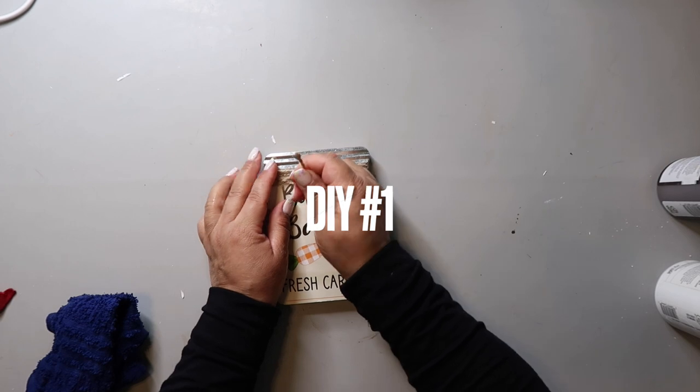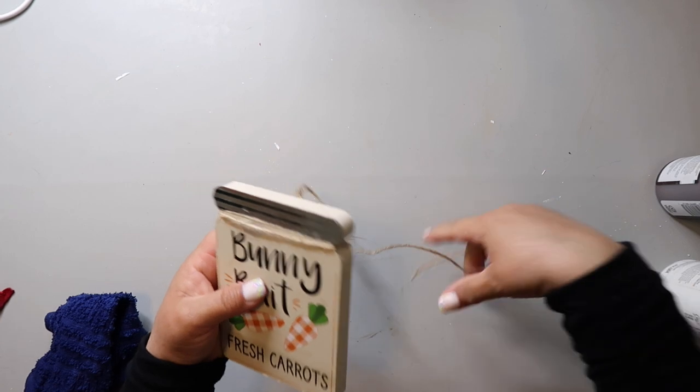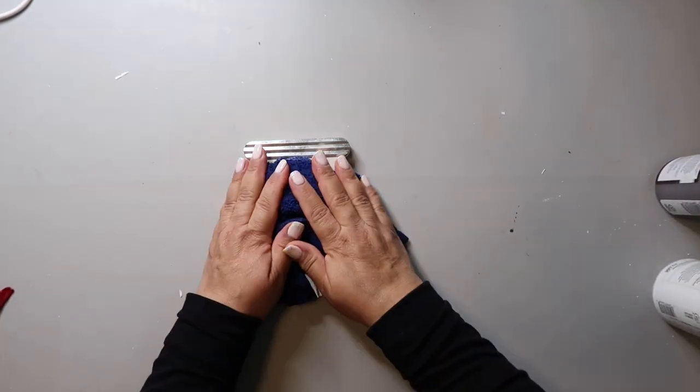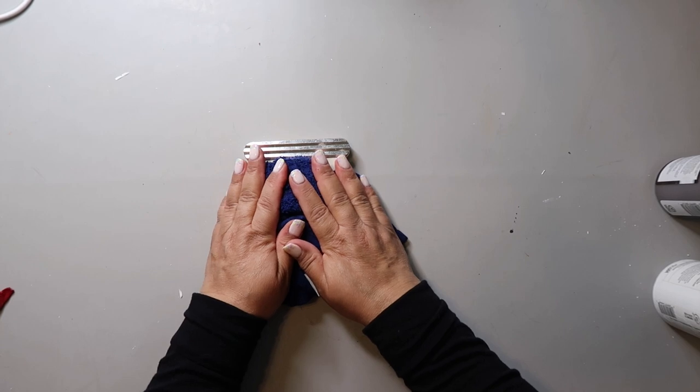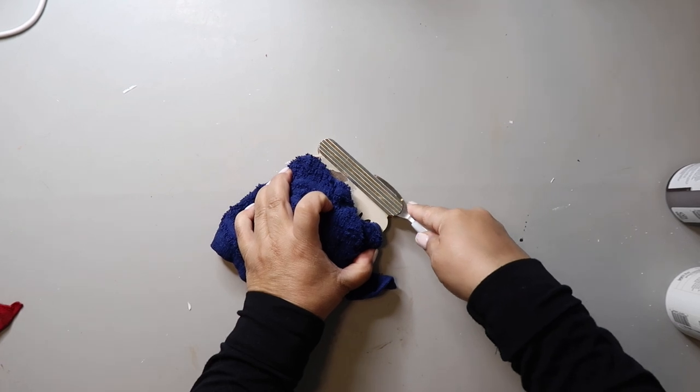For DIY number one, I'm taking this cute bunny bait sign from Dollar Tree and I'm going to remove the twine. And I'm also going to remove the paper on the front and I just take a very wet rag and let it sit on it for a bit. And I'm going to also remove the metal piece at the top of the sign.